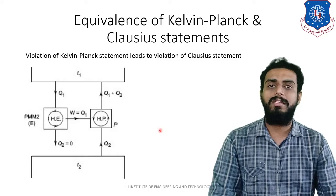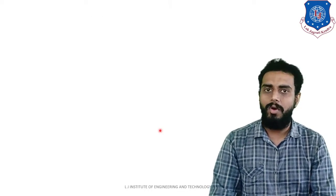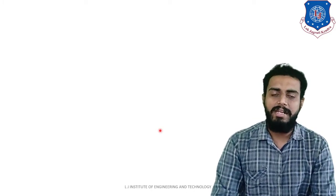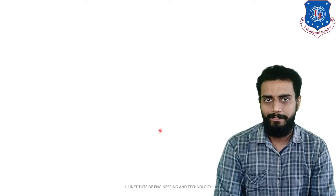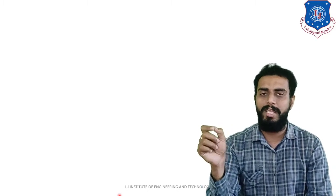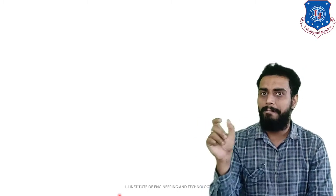The next topic is causes of irreversibility. Let us understand what reversibility and irreversibility mean. Reversibility means: if we do any process from A to B, and we can return from B to A by following the same path, it is called a reversible process. But that is not the case with actual real processes. Whenever we have a finite difference between two potentials, it will cause an irreversible process.